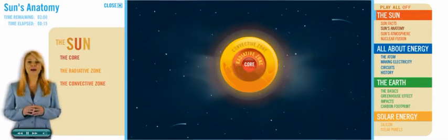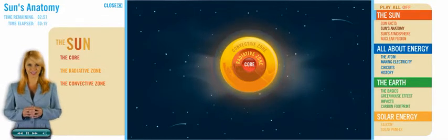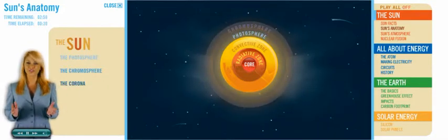The Sun is surrounded by an atmosphere, which itself has three separate parts: the photosphere, chromosphere and the corona.